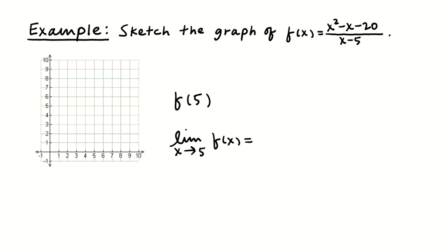Here is a rational function — maybe you studied these in a previous math class. Most of the ones we see in this class involve some canceling and aren't too high a degree. The first thing we're going to do is factor. So f of x is equal to (x minus 5)(x plus 4) over (x minus 5).